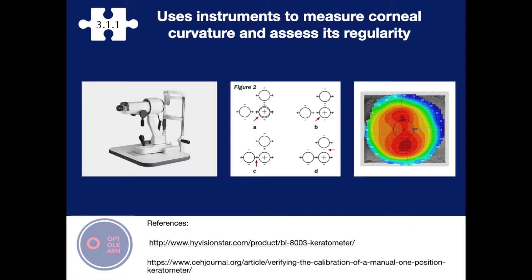For this competency, the main points to note are that there are two main types of manual keratometers: the fixed position, for example the Bausch and Lomb keratometer, and the two-position, for example the Javal-Schiotz. These keratometers measure the central three to six millimeters of the cornea.